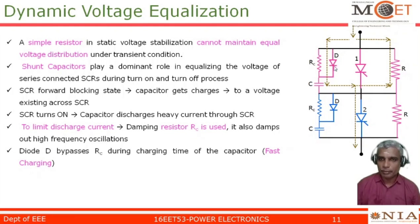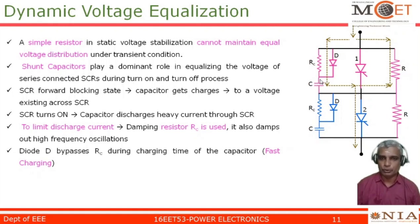The capacitor will forward bias and charge in this direction. RC will not come into picture when the capacitance is charging, which makes for quick charging of the capacitance. That is why this diode has been used in this particular dynamic voltage equalization circuit.